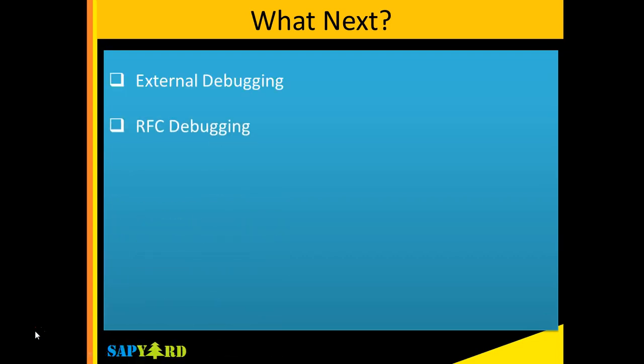Next, you might want to learn how to debug an RFC, that is a remote function core. You also need to learn how to do update debugging. If the function module is update-only, you need to know when that will get triggered. Usually when there is a commit statement or commit in the application, those debuggers get triggered and you need to know exactly how to debug them.